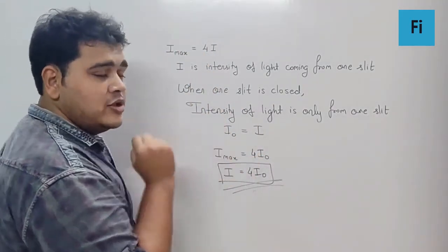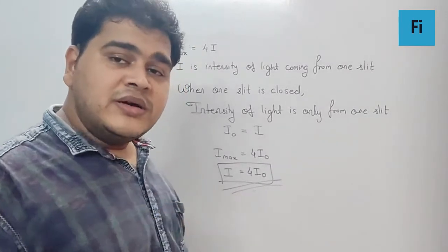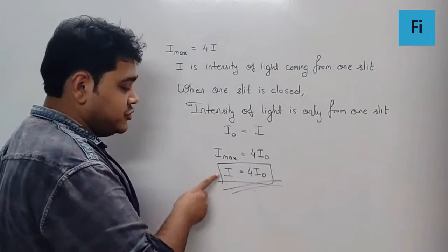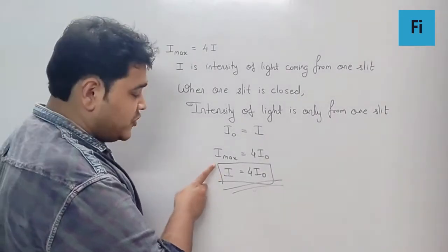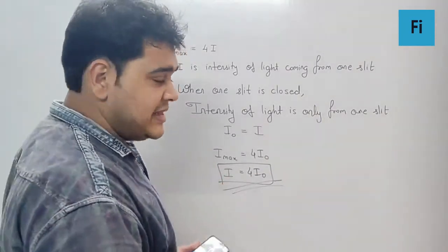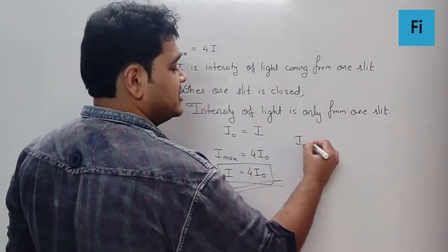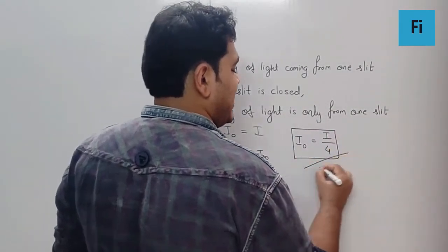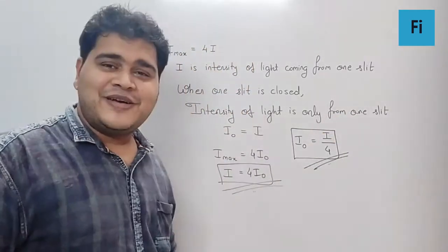Now here they have given the resultant intensity to be I. So I can substitute I_max to be I. So if I is 4I₀, can I say I₀ is going to be I/4? And that is going to be your final answer.